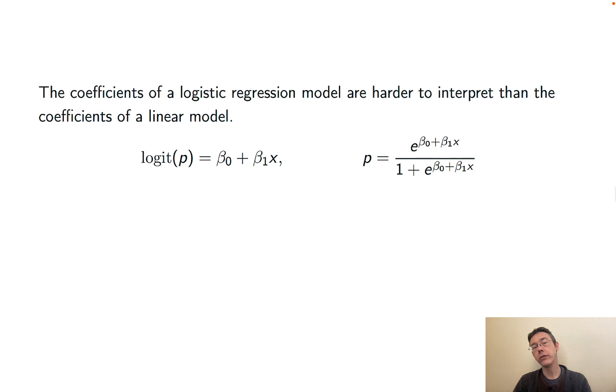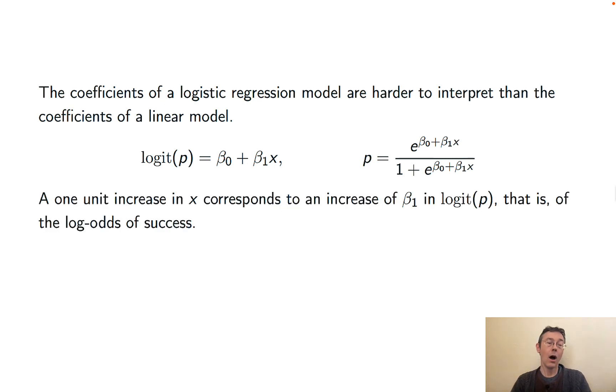Now, the coefficients in your logistic regression model are harder to interpret than the corresponding coefficients in a linear regression model. So here we're really asking the question, what do beta 0 and beta 1 mean here? A 1 unit increase in x corresponds to an increase of beta 1 in the logit of p, which we can interpret as the log odds of success.